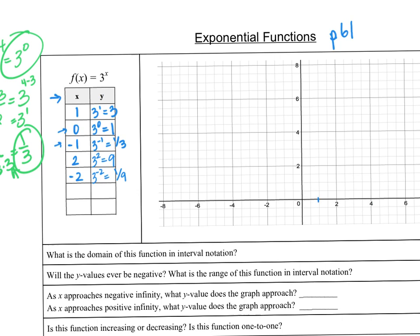The axis is counting by halves — 1, 2, 3. When we sketch the graph: at x = 1 we're up at 3; at x = 0 we're at 1; at x = negative 1 we're at 1 third, a little less than a half; at x = 2 we're all the way up at 9; and at x = negative 2 we're at 1 ninth. Connecting these points, as x gets larger the graph shoots higher. As x gets smaller with negative exponents, we get tiny fractions and approach the axis closer and closer without touching it.